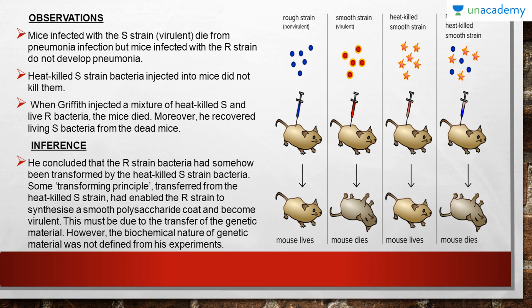This was a very interesting observation. Moreover, he recovered living S bacteria from the dead mice. From this he concluded that the R strain bacteria had somehow been transformed by the heat-killed S strain bacteria. Some transforming principle transferred from the heat-killed S strain, which enabled the R strain to synthesize a smooth polysaccharide coat and become virulent. This must be due to the transfer of genetic material.